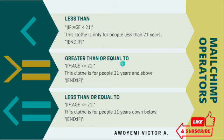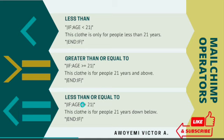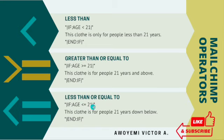We also have the greater than or equal to operator. For instance, if we want to send a campaign to customers whose age starts from 21, we create a conditional merge tag: if age is greater than or equal to 21, that means subscribers aged 21, 22, and above will receive this message. The last operator is the less than or equal to operator — 21 and below will receive the message. Those are the six major operators in Mailchimp CRM software.